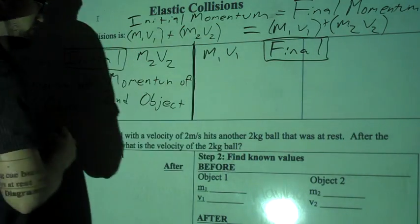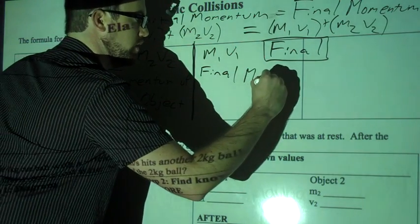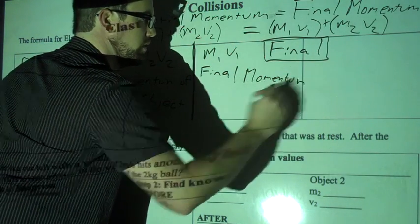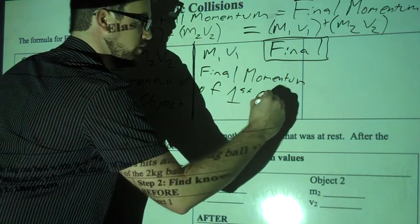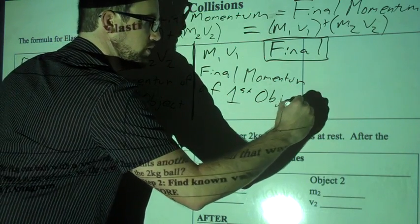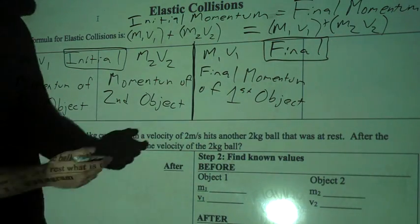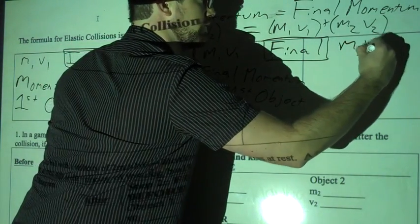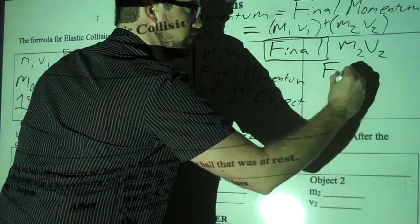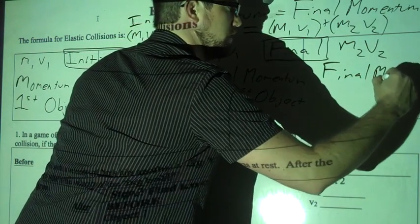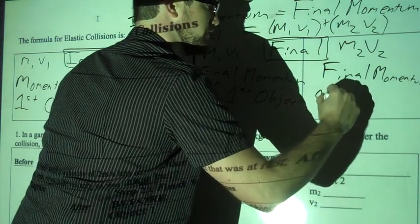And this is final momentum of the first object, and then obviously on the other side, we've got M2V2, which is going to be the final momentum of the second object.